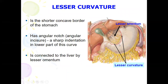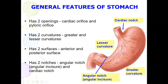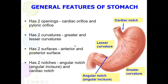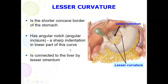For the lesser curvature, it is the shorter, concave border of the stomach. At the lesser curvature we have the angular notch, which is a sharp indentation at the lower part of this curve. The lesser curvature is connected to the liver by the lesser omentum.